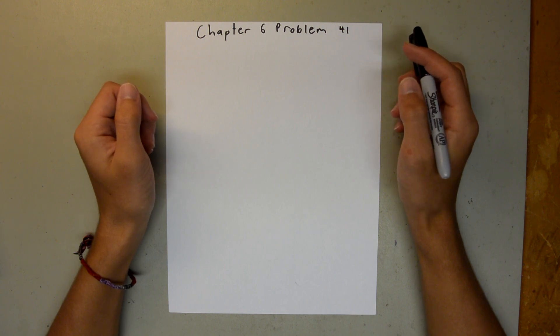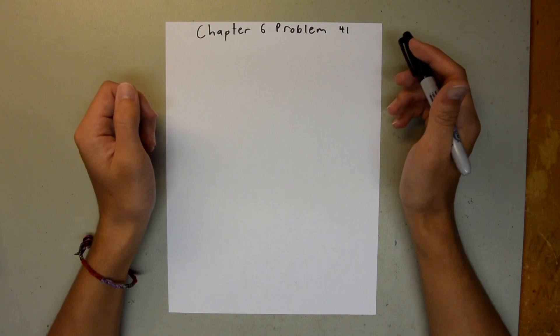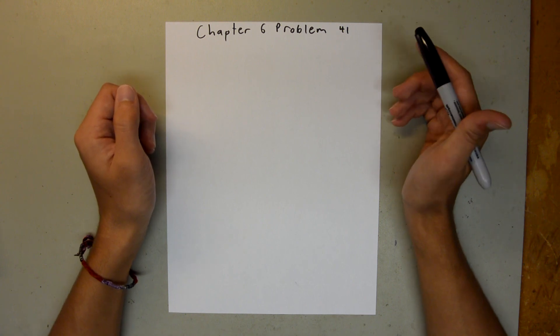Chapter 6 is all about force and motion, Part 2. And in Problem 41, we have someone riding a bike, and we're asked the smallest radius of a turn that the biker can go around, given their speed and the coefficient of static friction.